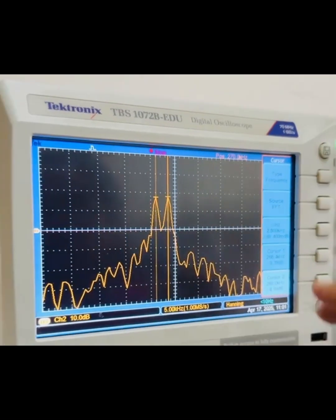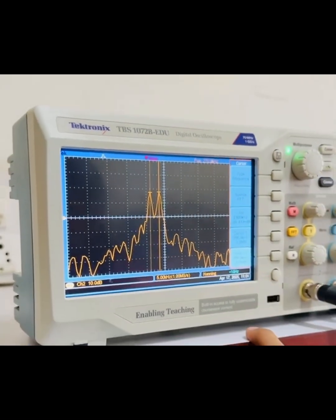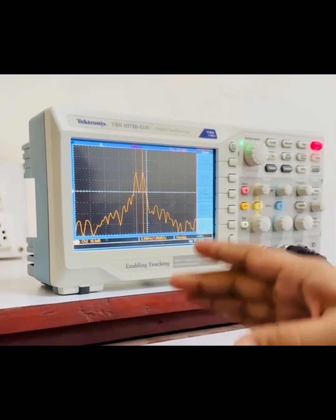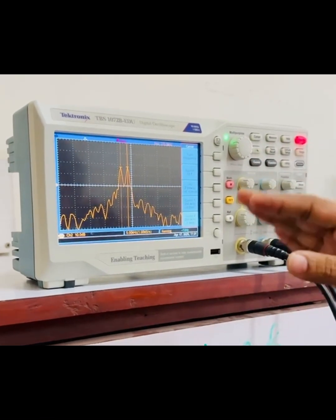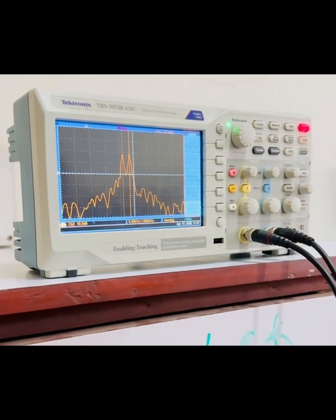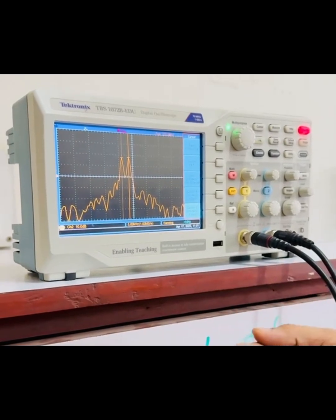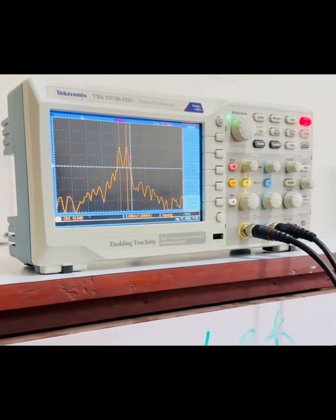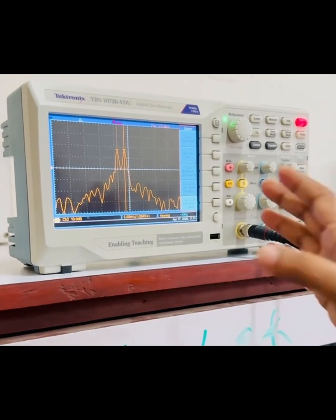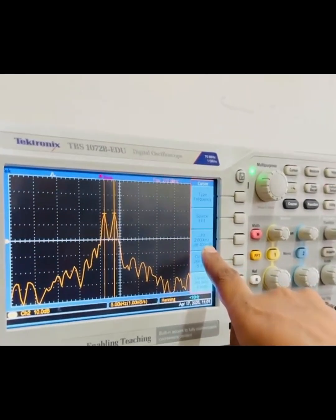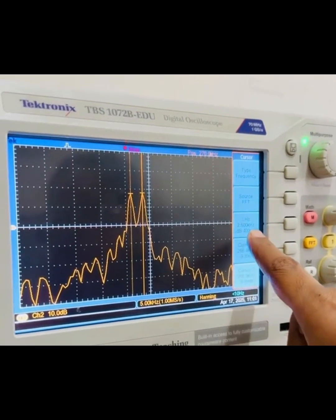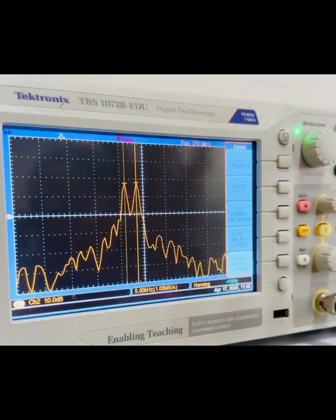If we remember, the frequency of the modulating signal adjusted was 1.26 kilohertz, and again the bandwidth is double the frequency of modulating signal, which is approximately 2.4 to 2.6 kilohertz, which can be verified using this reading on the spectrum. Thank you.